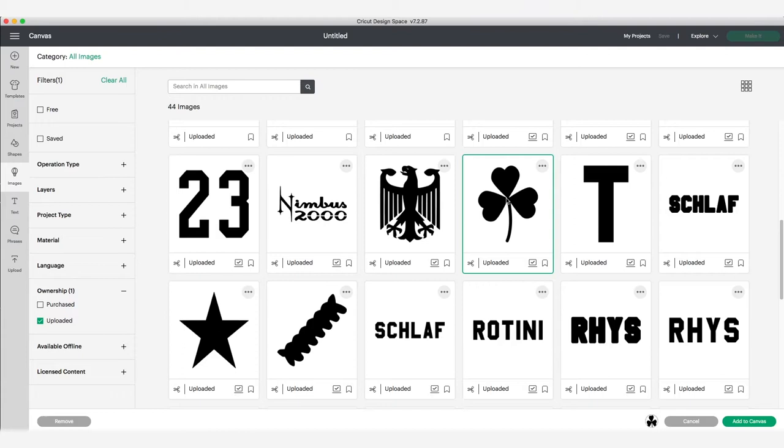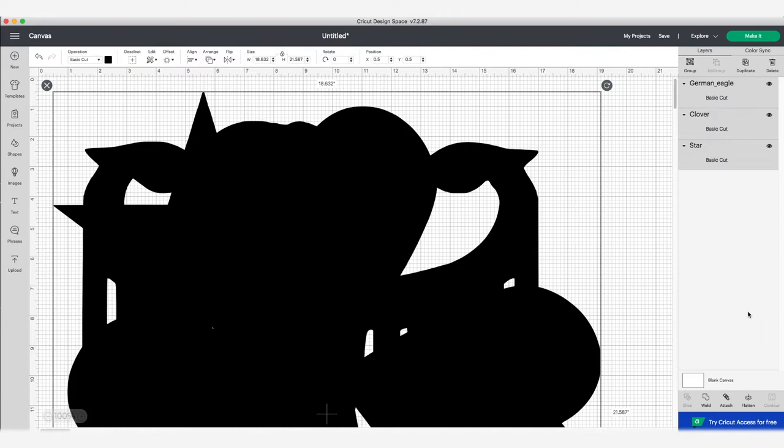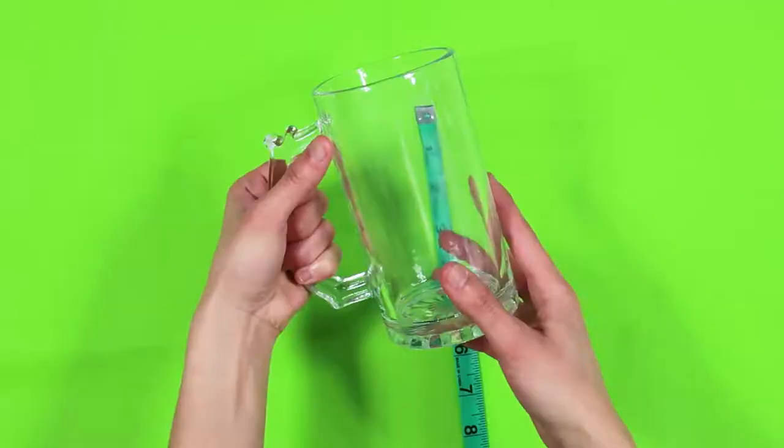Our designs are obviously way too big for our glasses, so we'll need to resize them. To help visualize the size you're thinking of making your design, you can always use measuring tape on the glass. After you resize them and you see how all the elements look together, you can tweak the sizes again as needed.